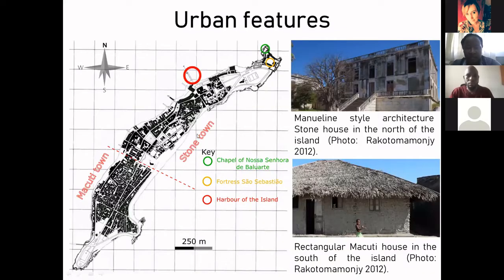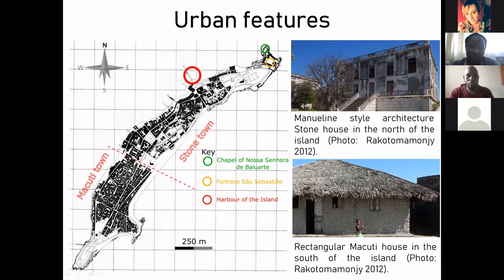During this long-distance trade and diverse cultural interaction, this island received settlements that, although small, created two very distinctive urban features. In the north side of the island is a stone town, mainly characterized by Manueline-style architecture of stone houses. When you go to the island and do some ethnographic work, the local Swahili community used to call this northern side the European side of the island.